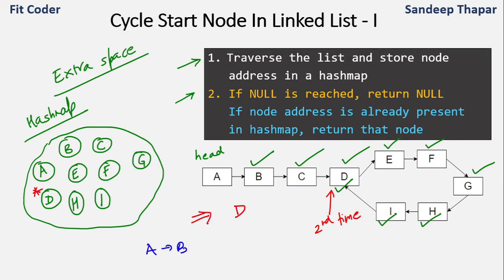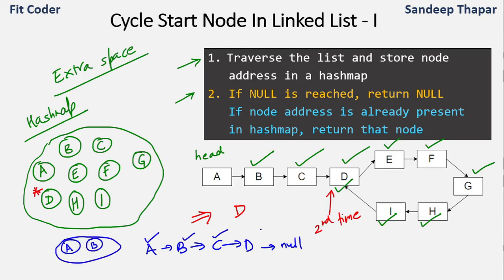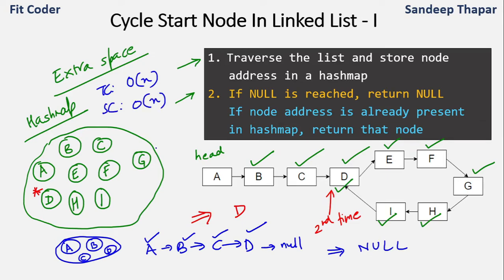If our linked list is A, B, C, D with D pointing to null, we insert A, B, C, D, then reach null — meaning the end of the list has been reached, so there is no cycle and we return null. The time complexity of this method is O(n) and the space complexity is also O(n), since it makes use of extra space. There is a more efficient method that doesn't use any extra space.